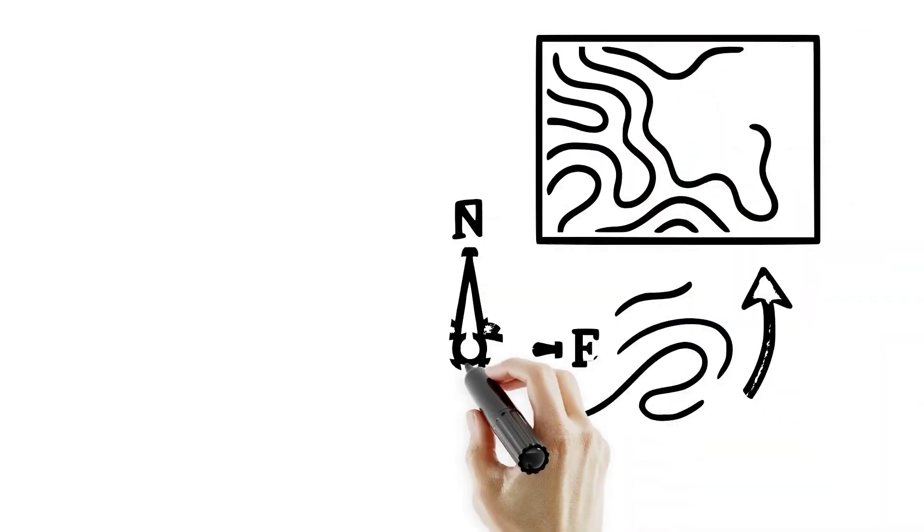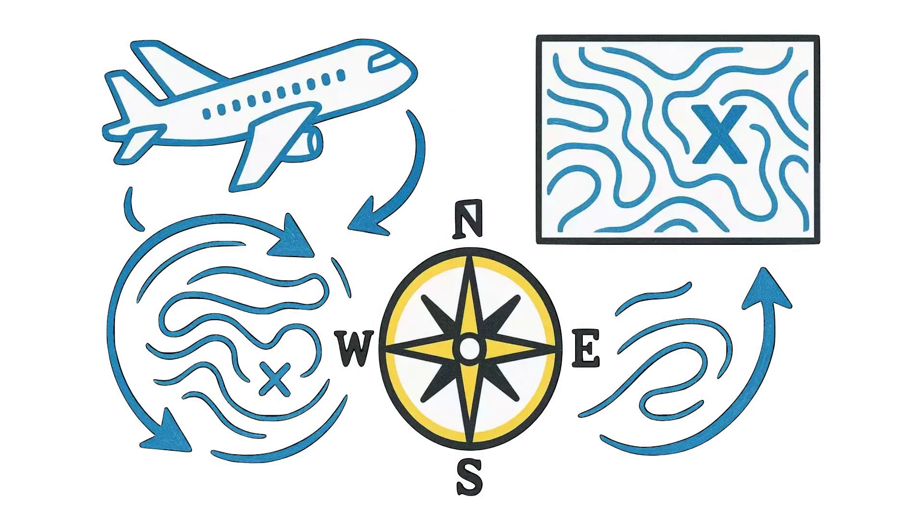Pilots and meteorologists account for this constantly, adjusting flight paths and forecasting winds. Without it, global navigation and weather systems would make no sense at all.